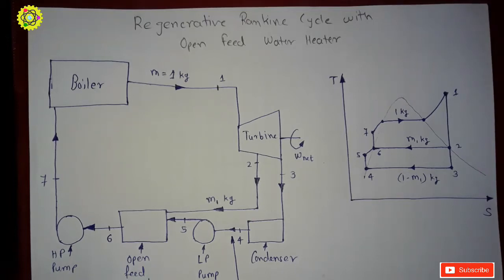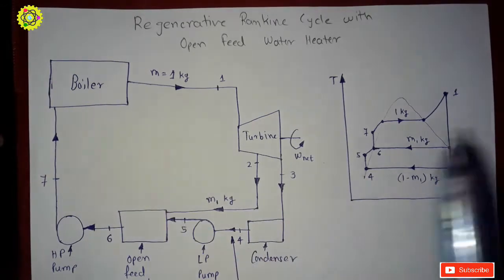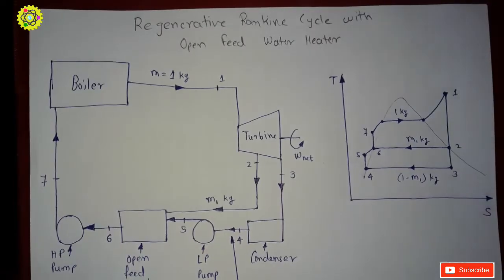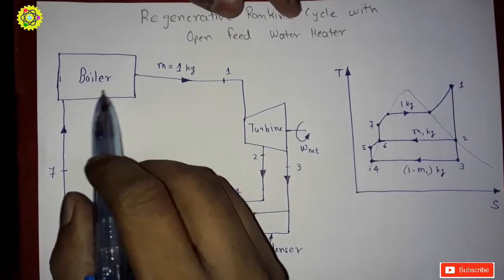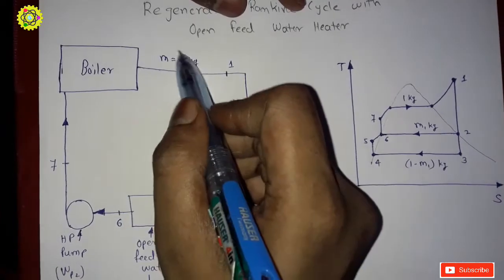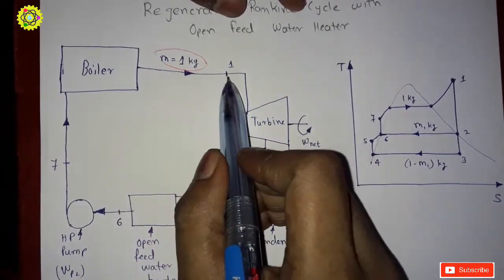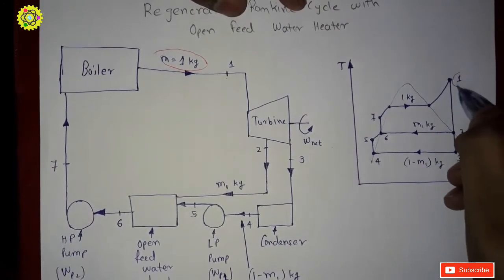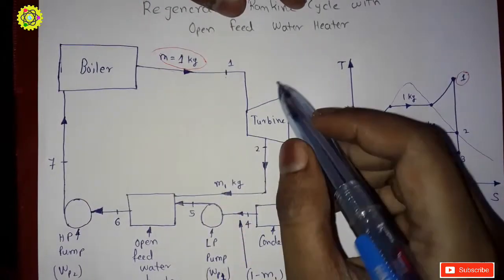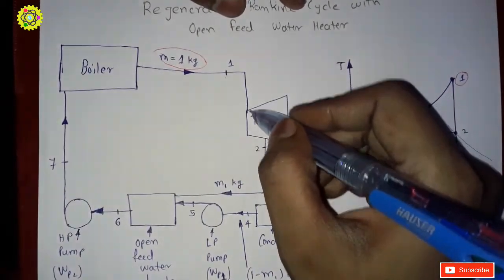Hello friends, welcome to my channel. In this video I am going to explain the regenerative Rankine cycle with open feed water heater using this diagram and this T-S graph. The steam coming out from the boiler is in the superheated state and it has suppose 1 kg mass at State 1. This is State 1 in the T-S diagram — superheated steam coming out from the boiler. This superheated steam goes inside the turbine.